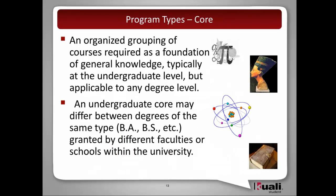Moving below the credential program, we have a core — or what we tend to think of as breadth or general education — program type. It's an organization of courses required for a foundation of general knowledge, typically at the undergraduate level. However, it is possible at the graduate level — for example, first-year law students all take the same general education classes and then branch out into electives. The undergraduate core may differ between degrees of the same type at the same institution in different faculties. At USC, the Bachelor of Science within Letters, Arts and Sciences had a different writing requirement than the Bachelor of Science offered through the School of Engineering.